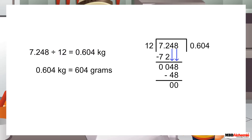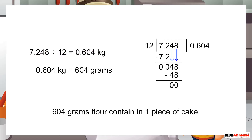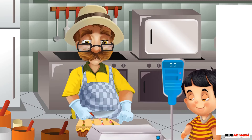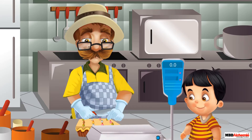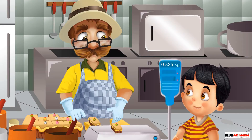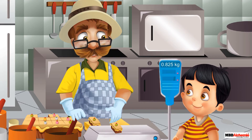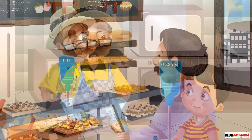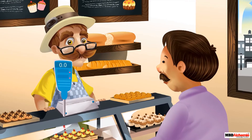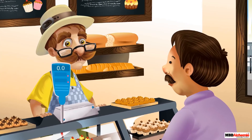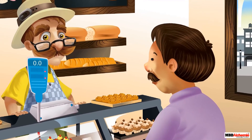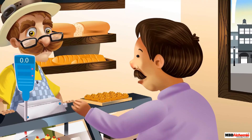We can also convert 0.604 kilograms into grams as 604 grams. Then he cuts the cake into 12 equal pieces and weighs one of them. He finds the weight of each piece is 825 grams. A customer comes to the shop and orders five pieces of fruit cake, asking uncle Joe what is the total weight of five pieces.